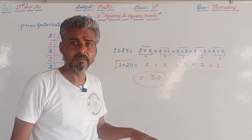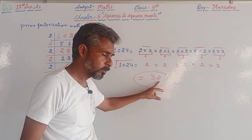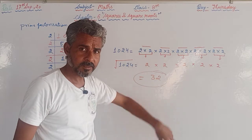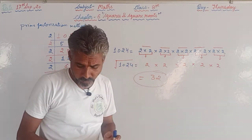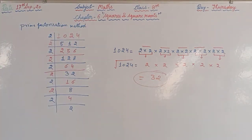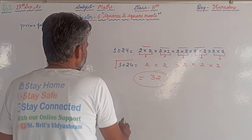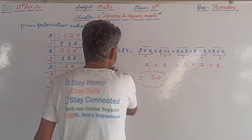We can verify our result by multiplying 32 by 32, and we will get 1024. Now let's find the square root of this number by the division method as well.